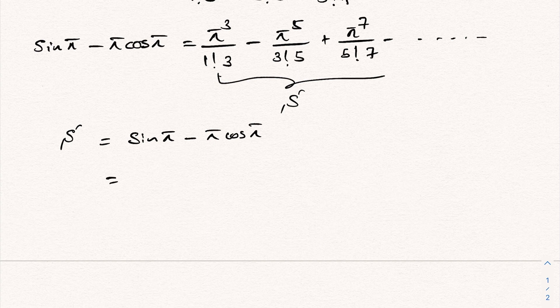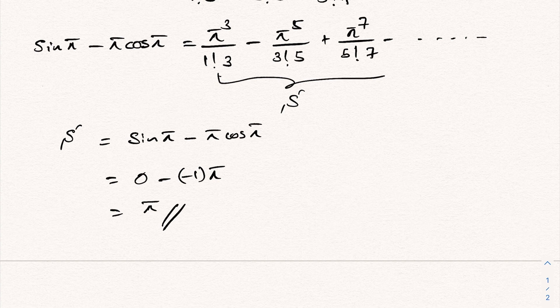So S equals sin(π) minus π·cos(π). We know sin(π) equals 0, and cos(π) equals -1, so minus π times (-1) gives plus π. Therefore the answer is π. If you like this type of video, please subscribe to this channel. Thank you for watching.